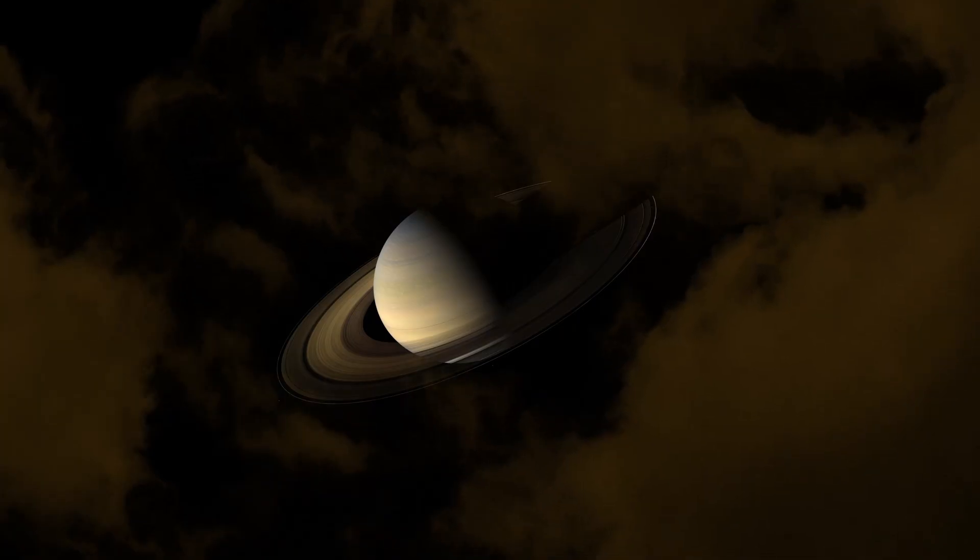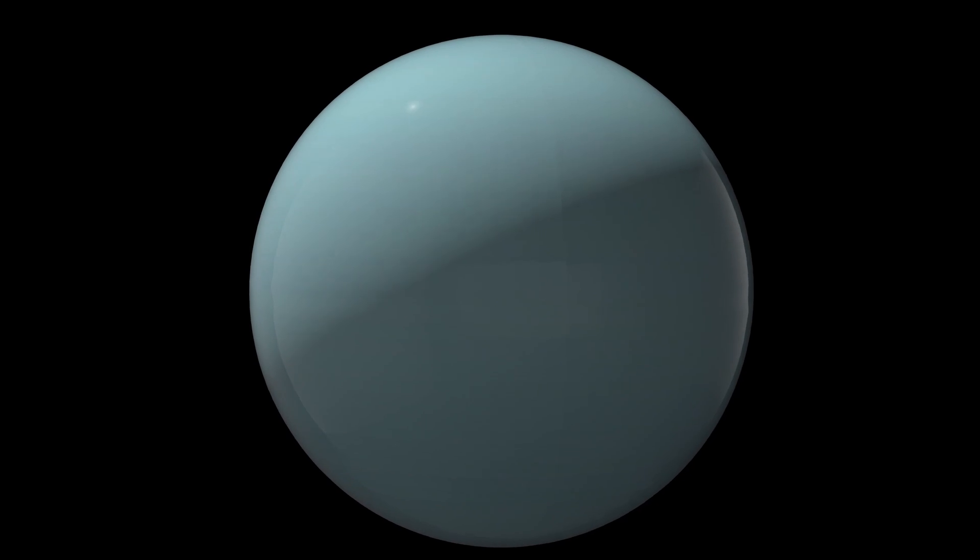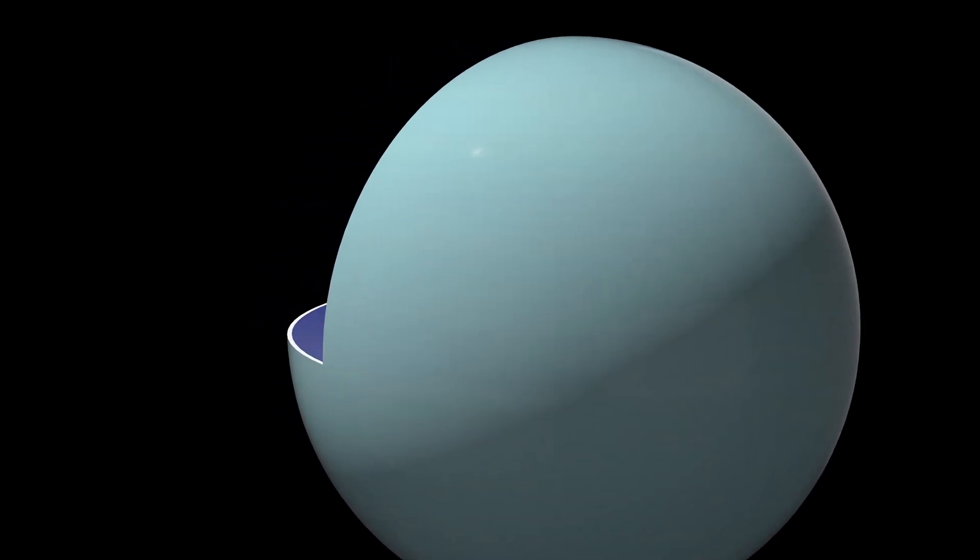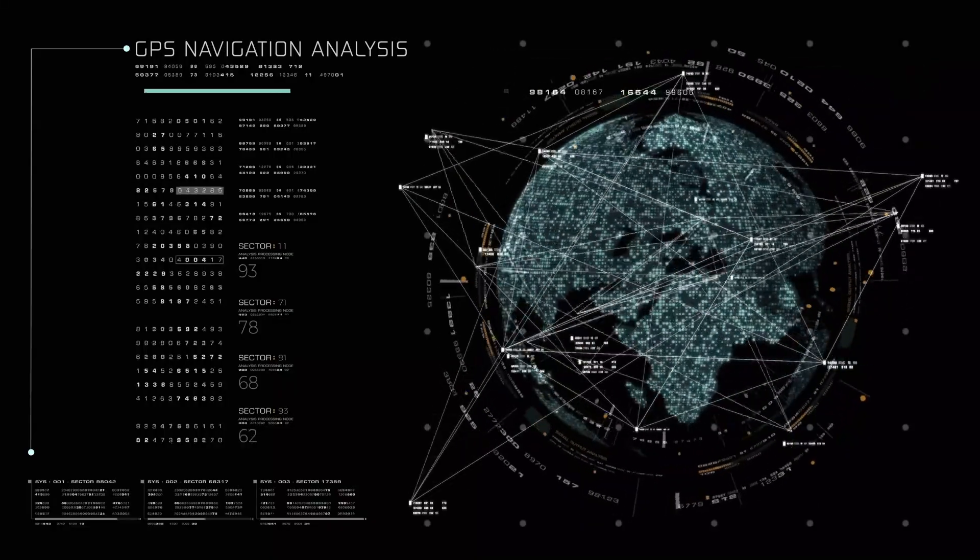Voyager 2, in particular, was the first spacecraft to visit Uranus in 1986 and Neptune in 1989. These historic flybys provided humanity's first detailed glimpses of these distant planets, revealing astonishing findings about their atmospheres, magnetic fields, and moons.